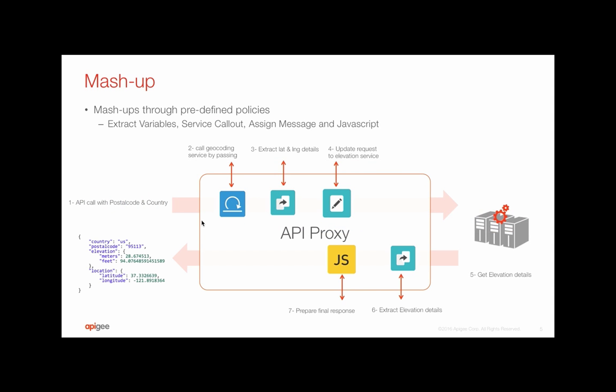To summarize, this is what we created as the new service API interface from Apigee, which internally called the geocoding service, the elevation service, and stitched all the responses up using JavaScript. If you have any questions, reach out to us on community.apigee.com. Thank you very much.